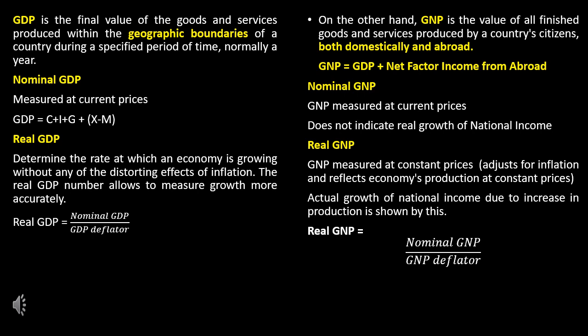Real GDP determines the rate at which an economy is growing without any of the distorting effects of inflation. The real GDP number allows us to measure growth more accurately. Real GDP is equal to Nominal GDP divided by the GDP deflator.